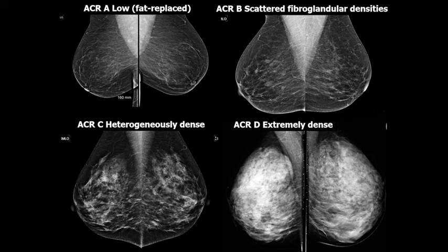Overall, mammograms account for about 85% of breast cancers being detected. But in women with more dense breast tissue — the ACR C and D categories — the sensitivity is much lower, with less than 50% sensitivity for detecting breast cancers in the extremely dense category.